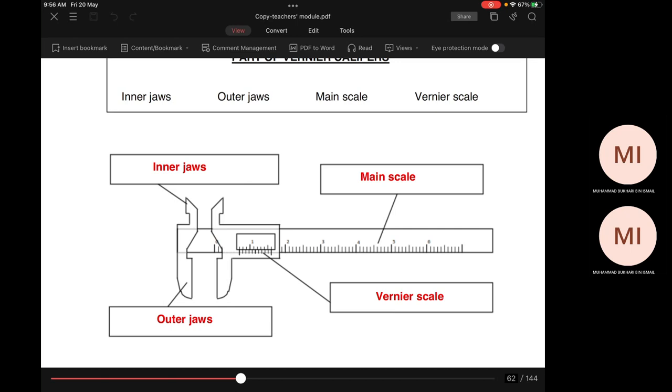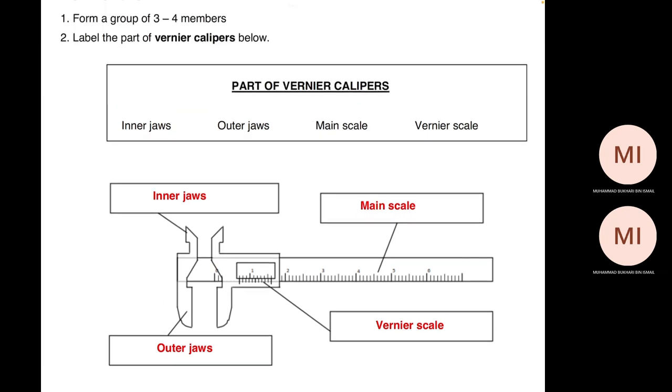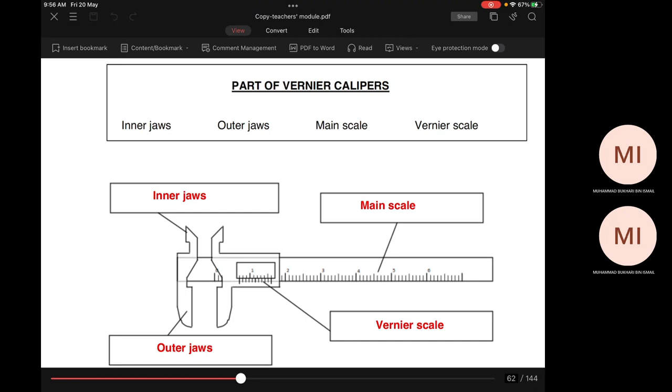Okay, so one more time we look at this vernier caliper. You need to know which one is inner jaw, main scale, outer jaws, and vernier scale.